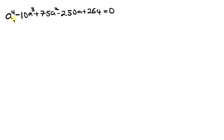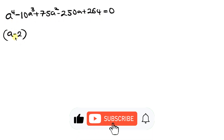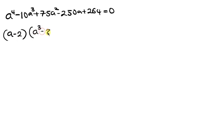We have a quartic equation and we'll use the factor theorem to solve it. Testing a = 2, we find that (a minus 2) is a factor. Dividing the quartic by (a minus 2) gives a³ minus 8a² plus 59a minus 132 equal to 0.